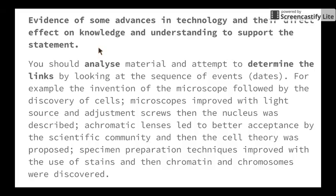In order to do this, you should analyse material and attempt to determine the links by looking at the sequence of events, from the earliest date through to the most recent. For example, the invention of the microscope was followed by the discovery of cells — until we had the microscope, we weren't able to look beyond the surface of a lot of organisms. Microscopes then improved with the addition of a light source and adjustment screws to change the magnification and focus, and then we were able to describe the nucleus. The addition of achromatic lenses led to better acceptance by the scientific community, and then the cell theory was proposed. Lastly, specimen preparation techniques improved with the use of stains, and what we were able to see was the chromatin and chromosomes of cells, which led us to the third point of the cell theory — that cells came from pre-existing cells — as we were able to observe mitosis taking place.